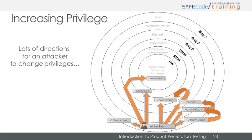It's also important to call out lateral privilege changes. While not increasing privilege in the sense of moving up the recognized privilege hierarchy, changing from one user account or process thread to another gives the attacker the aggregate privileges of both, along with whatever additional resources the other account or process had.